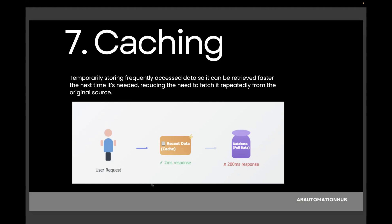In this sample diagram, a user accesses a website and all the data is put in cache memory. Next time the user accesses it, instead of going to the main database — which takes 200 milliseconds — it fetches from the cache in just 2 milliseconds. We have different types of cache: browser-level cache, which keeps files locally, and database-level cache, which stores query results in memory. The benefit is reduced server load and much faster, more efficient responses.